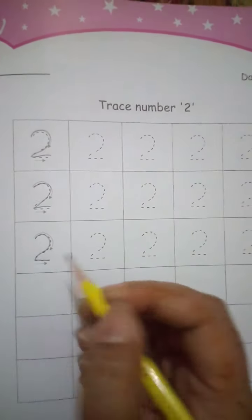Make a curve, come down, and make a sleeping line. It's 2. Write it by yourself: make a curve, come down, make a slant line, then make a sleeping line. It's 2. Write it again: make a curve, come down.